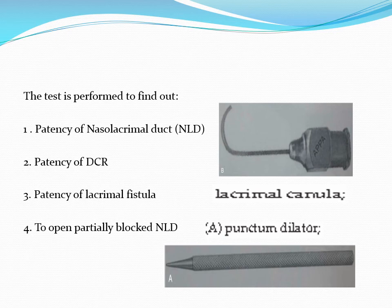The test of lacrimal syringing is performed to find out the patency of the nasolacrimal duct, also known as the NLD; to check patency after DCR, which is a dacryocystorhinostomy operative procedure; for the patency of lacrimal fistulas; and to open a partially blocked nasolacrimal duct. The instruments used for lacrimal syringing are the punctum dilator and a lacrimal cannula.